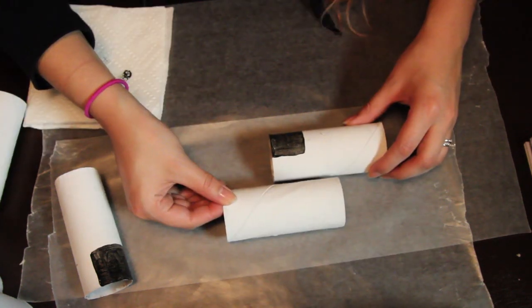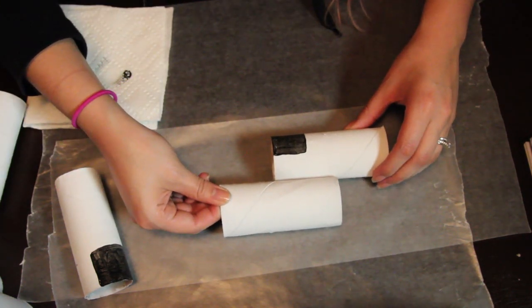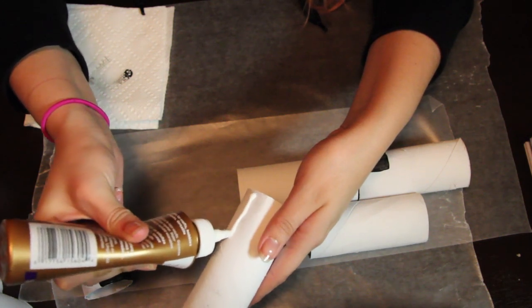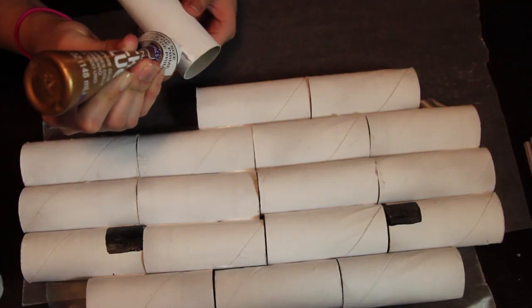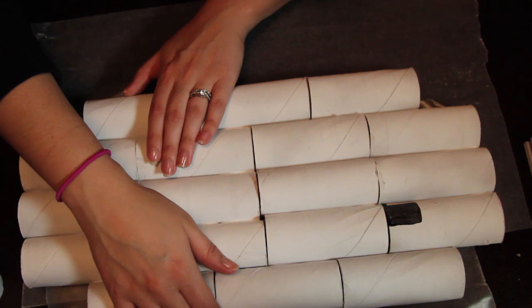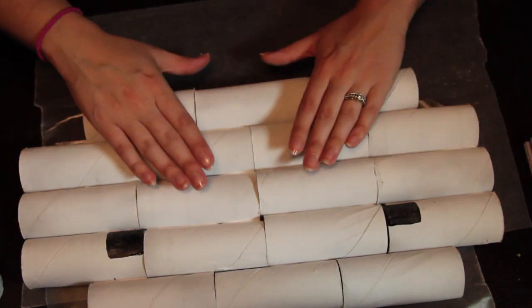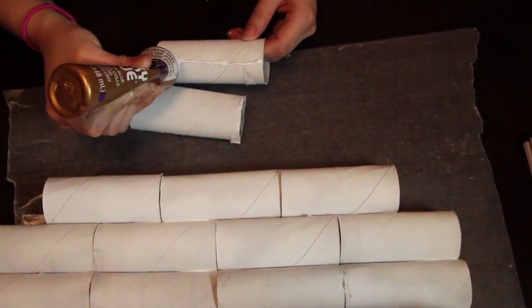So now I'm going to glue everything together. For a Gomez head, it's going to be seven rows in total. Two for the fez hat and five for his actual face. So you're going to glue them together. Make sure to place it on wax paper so you don't get it on your surface.